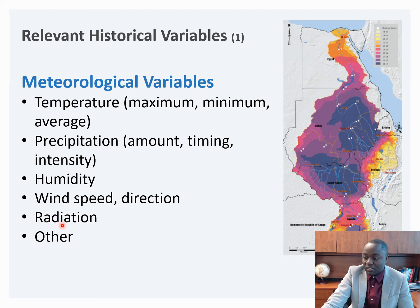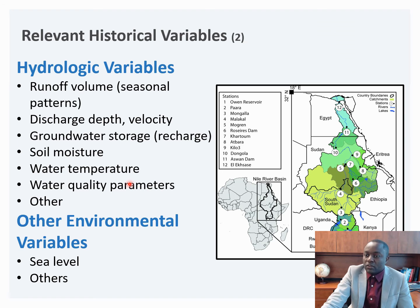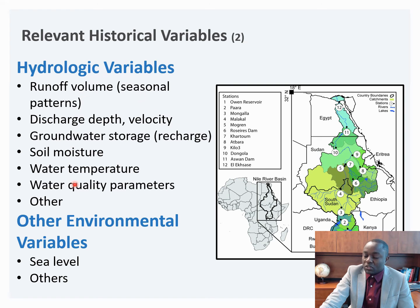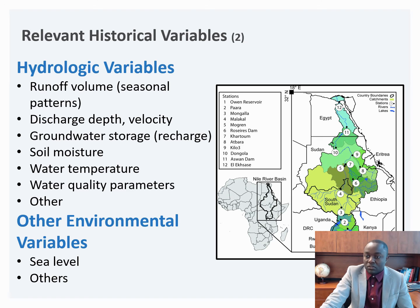In terms of hydrological variables, we typically require runoff volume, discharge depth and velocity, groundwater storage, soil moisture, water temperature, water quality parameters, and others. In terms of environmental variables, we typically require sea level rise, amongst others. These are project specific — for some projects, we require most or all of these variables, but in some other projects, we require just a few, such as precipitation and temperature. The location of the project matters, and the timescale of the project also matters.